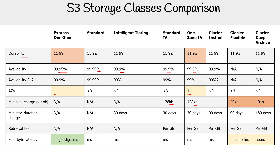For minimum storage duration, intelligent tiering requires at least 30 days because it has to analyze the file for 30 days before it can move it to another tier. I could be wrong on the exact billing details, but for intelligent tiering to be effective, the object needs to be in there for 30 days before it can transition to another tier.